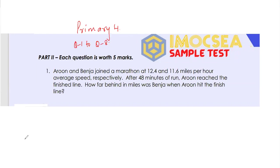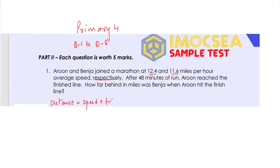Arun and Benja joined a marathon at 12.4 and 11.6 miles per hour average speed respectively. So respectively means Arun is 12.4 and Benja is 11.6. When you're reading in exams, don't go for the names — you can just read it as A and B. That'll be faster. After 48 minutes of running, Arun reached the finish line. How far behind in miles was Benja when Arun hits the finish line?